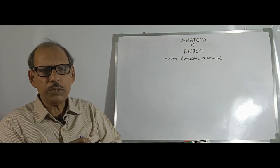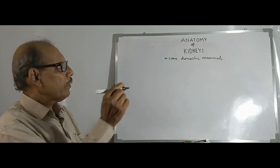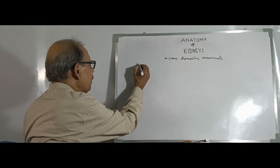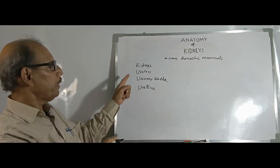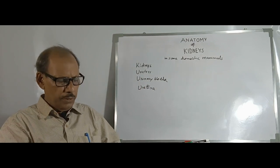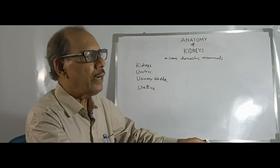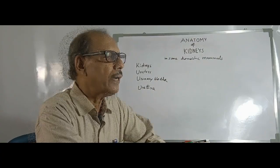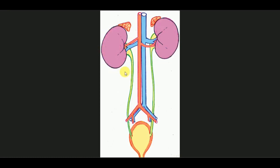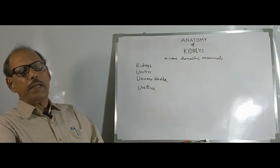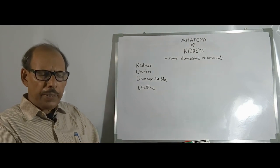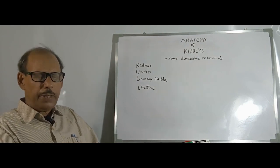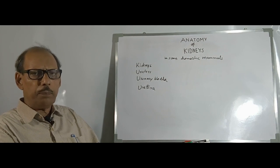This urinary system is composed of kidneys, which are the main components. If you look at the figure, they are a pair of bean-shaped structures situated at the cranial aspect of the abdominal cavity at its dorsal part, and they remain above the peritoneum. They are retroperitoneal in position.